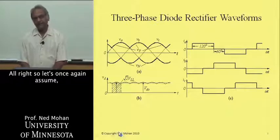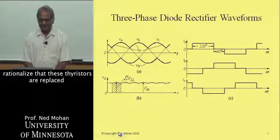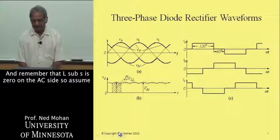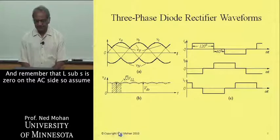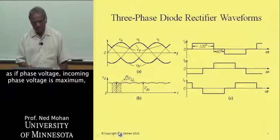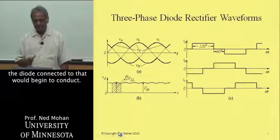Let's once again assume, visualize that these thyristors are replaced by diodes. Remember that L sub S is zero on the AC side. So as soon as a phase voltage, incoming phase voltage is maximum, the diode connected to that would begin to conduct.